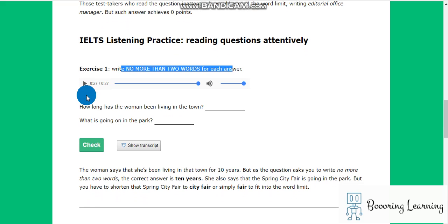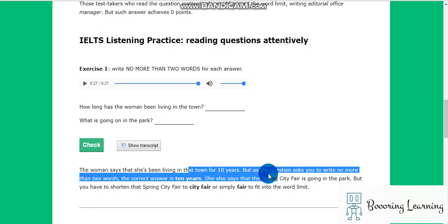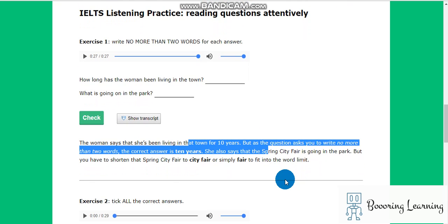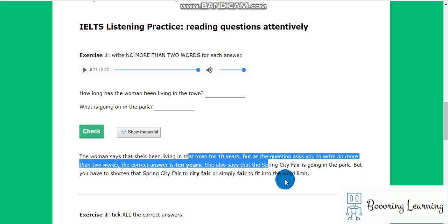So the woman says that she has been living in that town for 10 years, but as the question asks you to write no more than two words, the correct answer is 10 years. So you can't write the number 10. She also says that the spring city fair is going on in the park, but you have to shorten that spring city fair to city fair or simply fair to fit into the word limit.